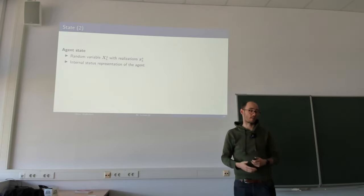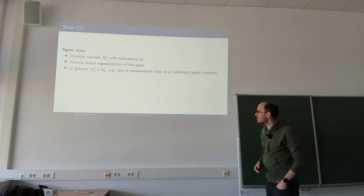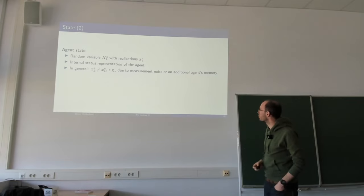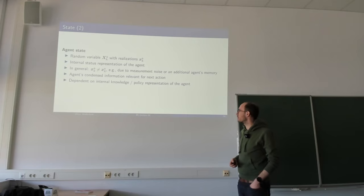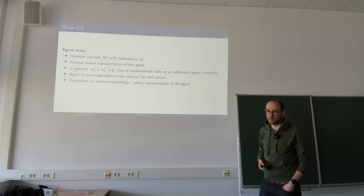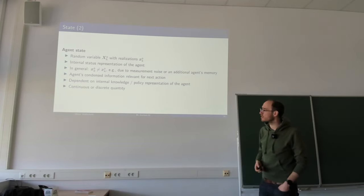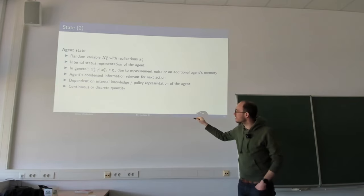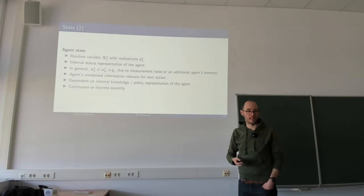We have the environment view and the agent view. Normally they are not identical — for example, due to measurement noise or additional agent memory. The agent state condenses all information relevant for next actions, depending on internal knowledge and policy representation. It can be continuous or discrete, and we will consider both, starting with discrete quantities.